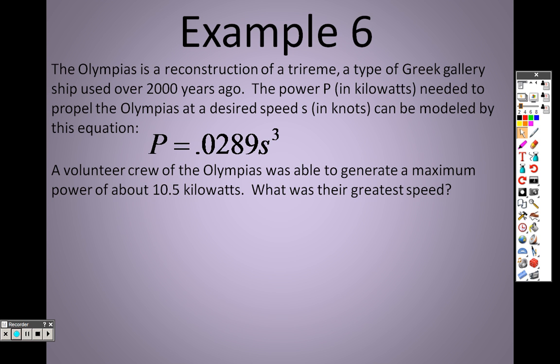It says that a volunteer crew of the Olympias was able to generate a maximum power of about 10.5 kilowatts. So I know what P is. It's telling me what P is. It's saying that P is 10.5. So if that's what it is then I'm golden.